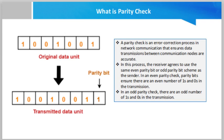Friend, parity check is an error correction process in network communication that ensures data transmission between communication nodes are accurate. In this process, the receiver agrees to use the same even parity bit or odd parity bit scheme as the sender.